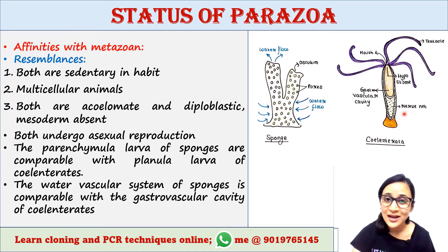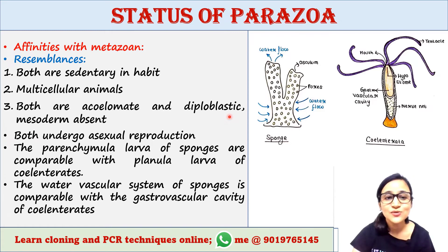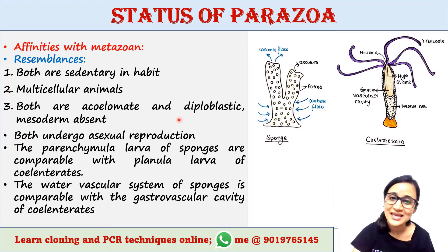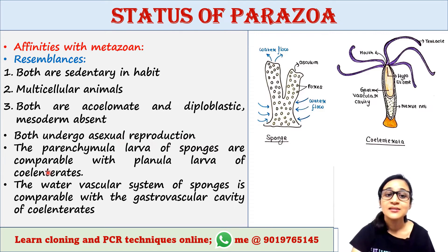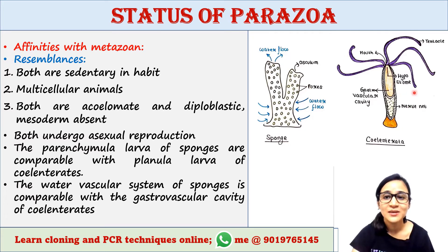Both Parazoa and coelenterates are acoelomate and diploblastic — they do not have a coelom or body cavity, and they have only two germ layers, ectoderm and endoderm; mesoderm is absent in both. Both undergo asexual reproduction. The parenchymula larvae of sponges are comparable with the planula larvae of coelenterates.